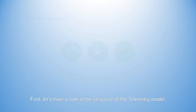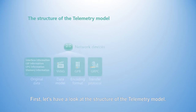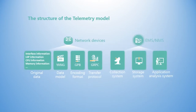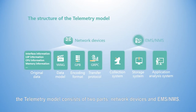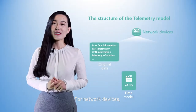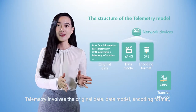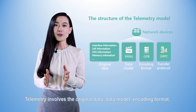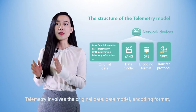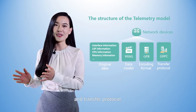First, let's have a look at the structure of the telemetry model. To implement network monitoring, the telemetry model consists of two parts: network devices and EMS or NMS. For network devices, telemetry involves the original data, data model, encoding format, and transfer protocol.